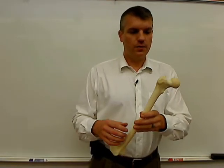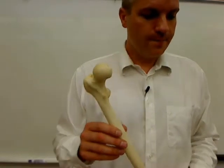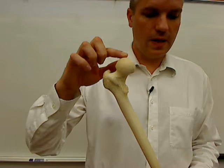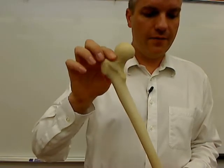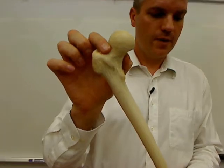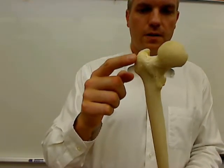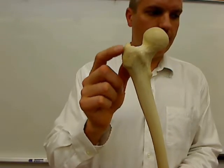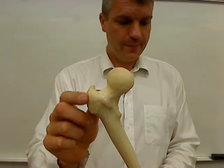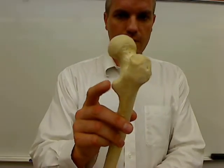So that tells me that I have the right femur. For the features of the femur: the head, which I already mentioned, is here. The neck of the femur is here. The greater trochanter is this large knobby structure off to the side — it's for muscle attachment. The lesser trochanter is down here.